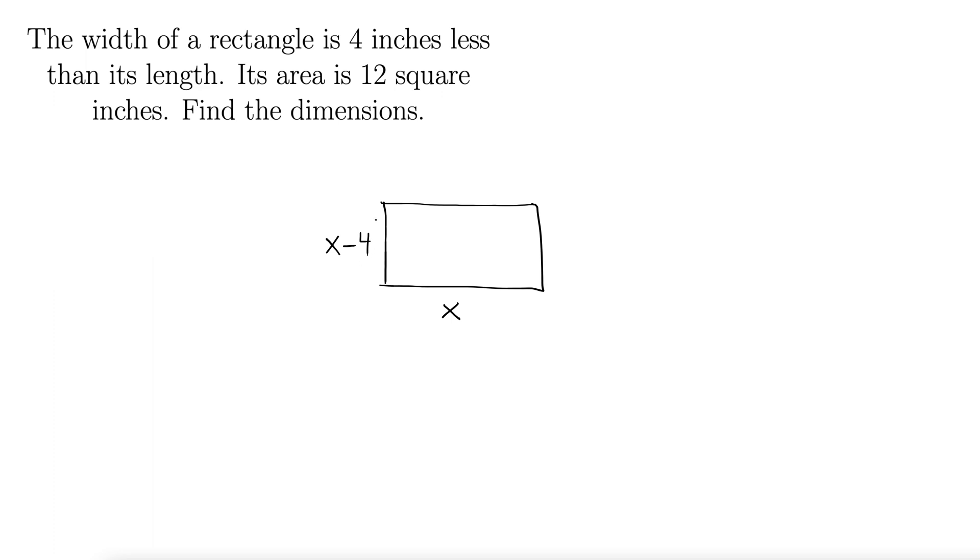Length minus 4 gives us the width because we decided x was the length. And now it says area is 12 square inches. Well, recall that area is length times width.